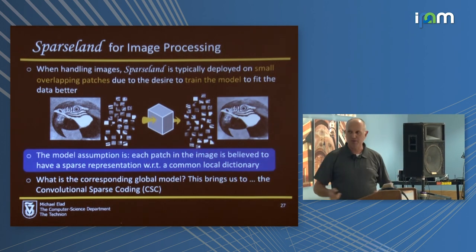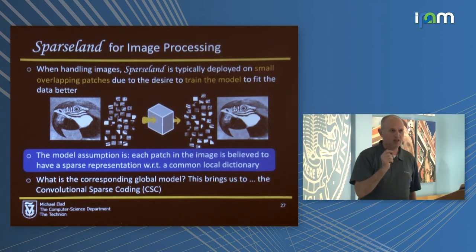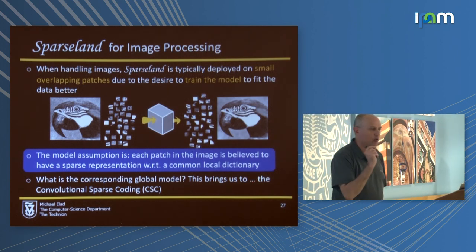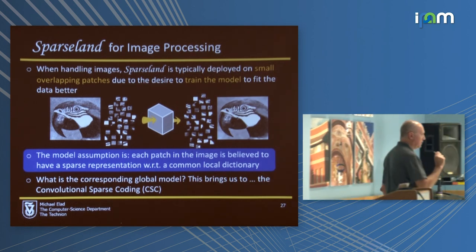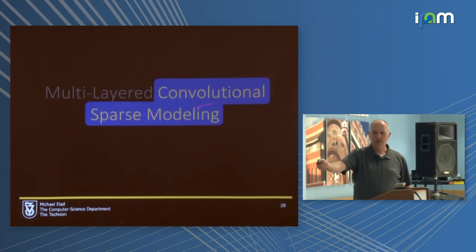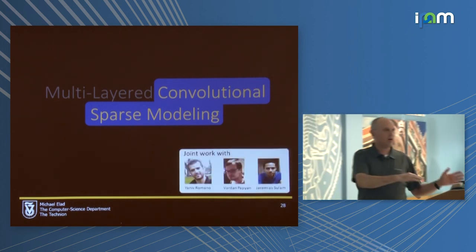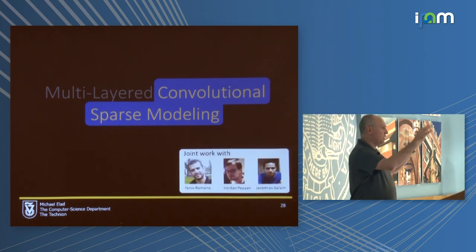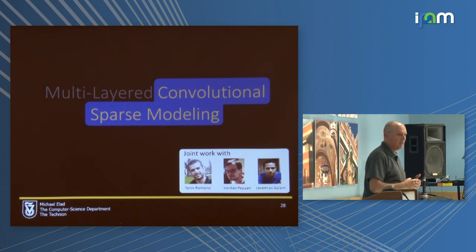There is a model that says every patch in the image is believed to have a sparse representation with respect to the same dictionary. So let's now move to the convolutional sparse modeling.